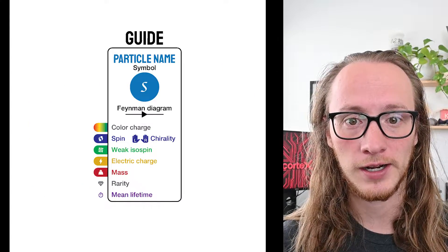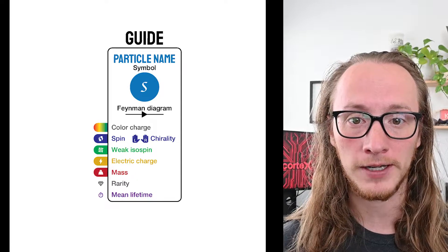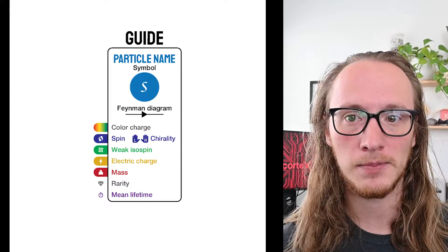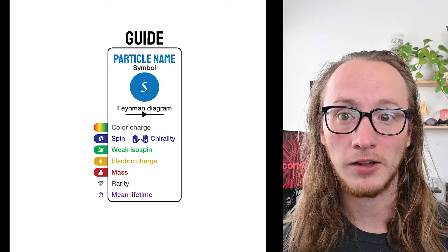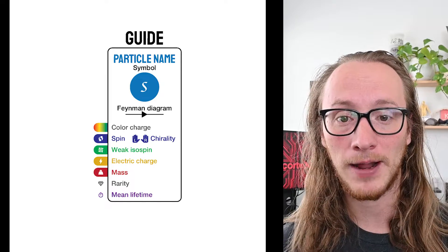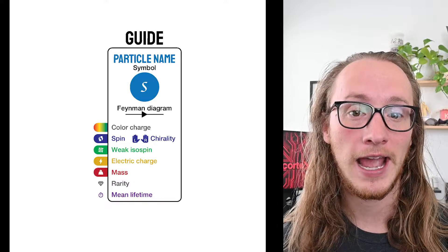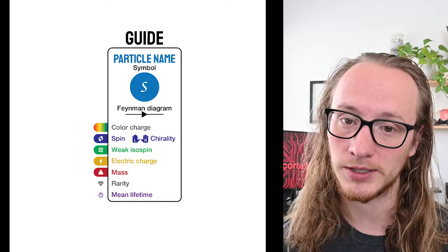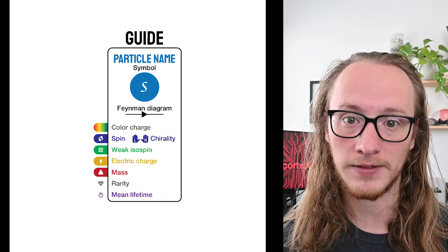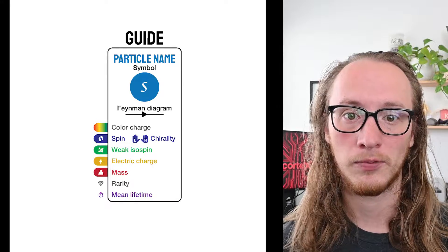Each particle in this chart has these fundamental properties listed out: the name, its symbol, the Feynman diagram, the color charge, spin, chirality, weak isospin, electric charge, mass, how rare this object is which is subjective, and its mean lifetime, how long it lasts before it decays.